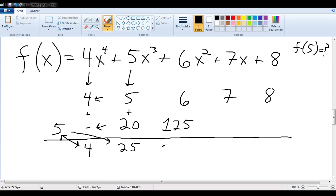And now I add again. So I get 131. And now I multiply. So that must be 655, probably. Now I have to add again, 662. Now 5 times 662, so that would be 3,310. And we're going to add the 8 here, and we get 3318.